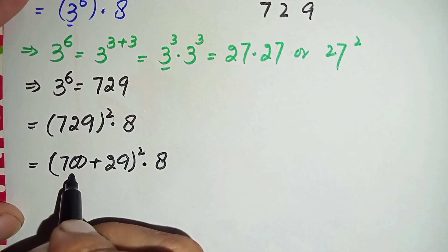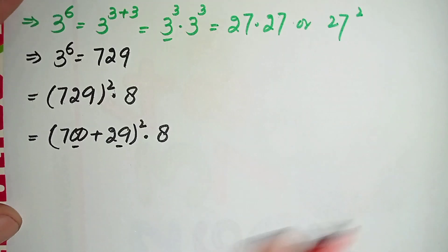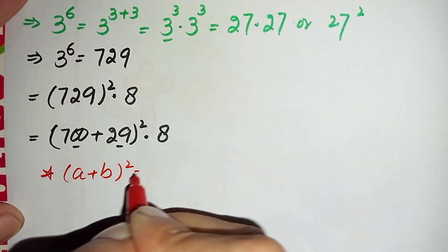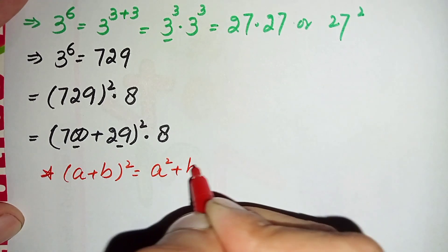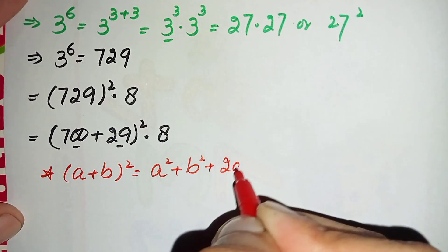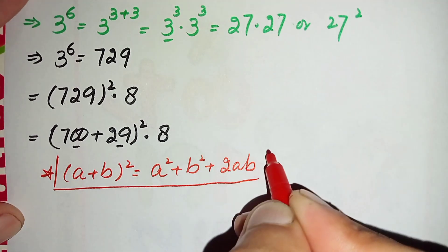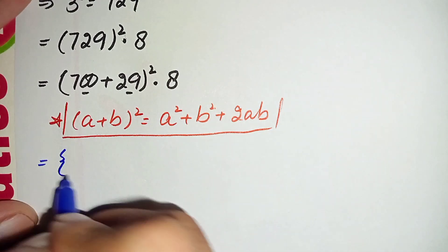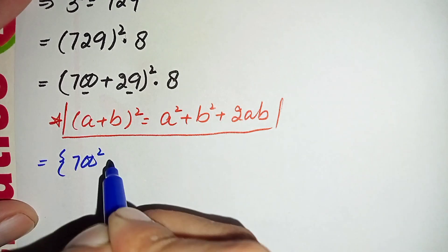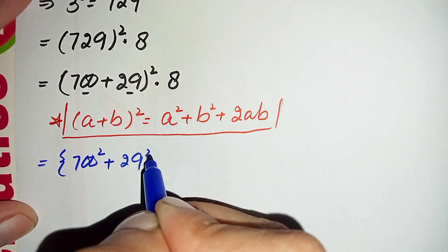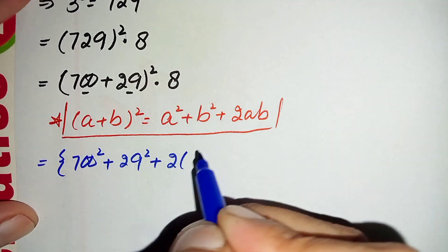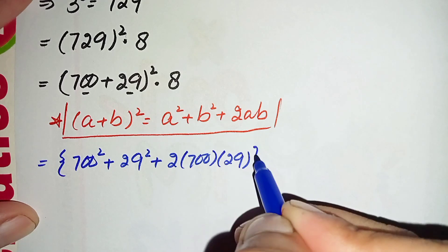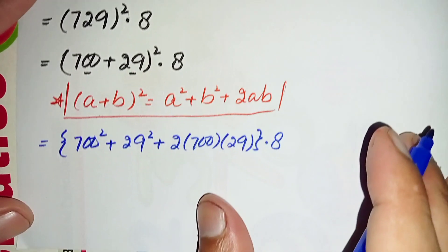Now in this term we will use the algebraic identity a plus b whole squared, which equals a squared plus b squared plus 2 times ab. Using this identity with a equal to 700 and b equal to 29, this equation becomes: 700 squared plus 29 squared plus 2 times 700 times 29, all times 8.